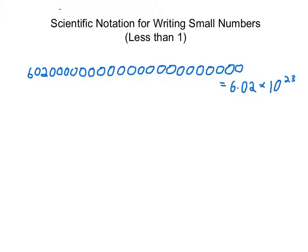In order to write very small numbers, less than one in scientific notation, we'll need to use negative exponents.